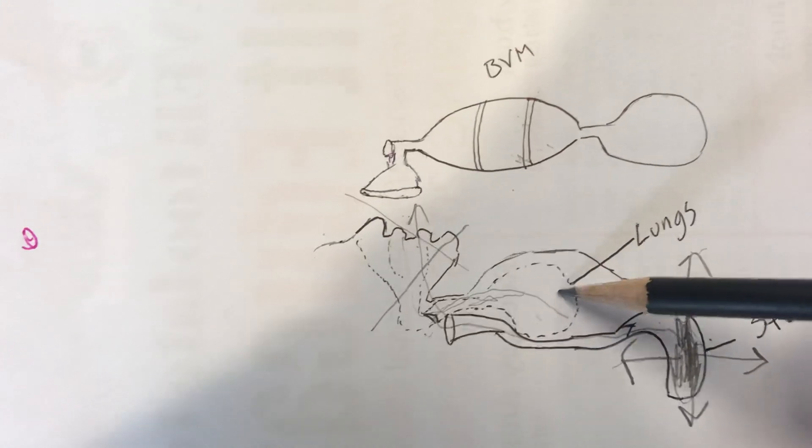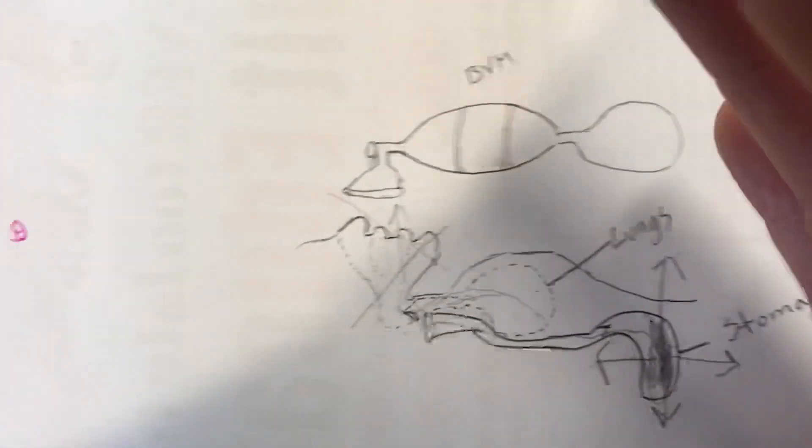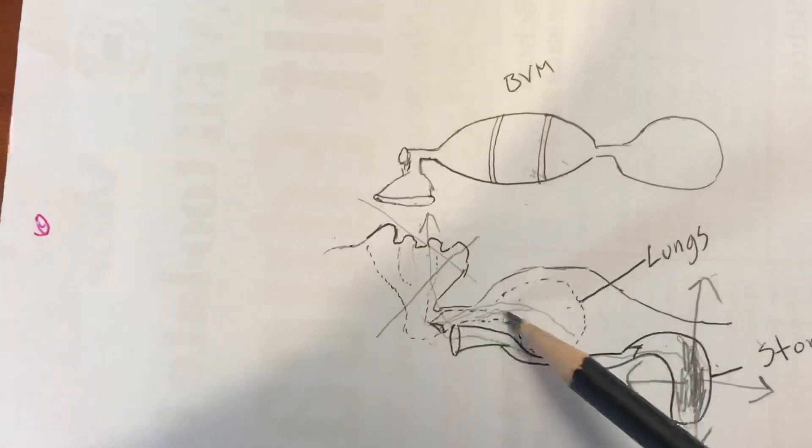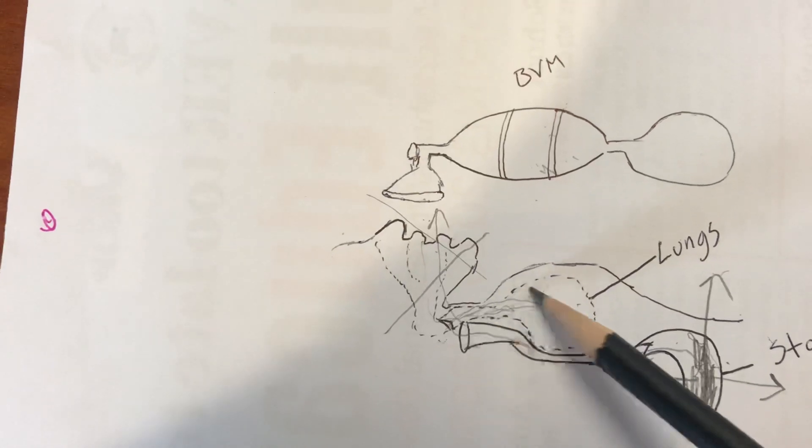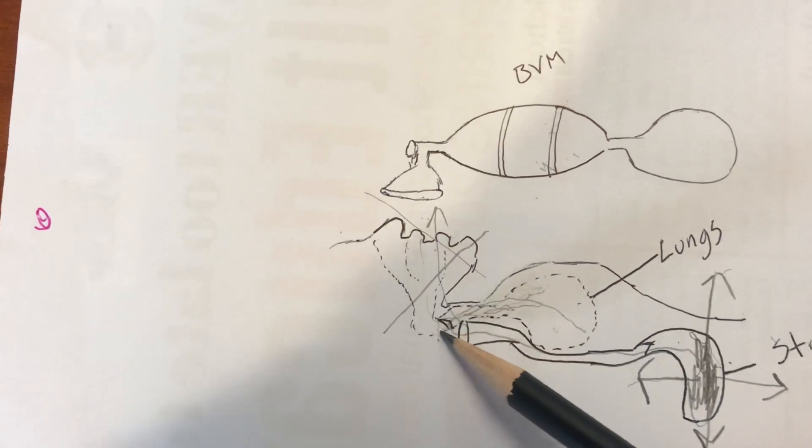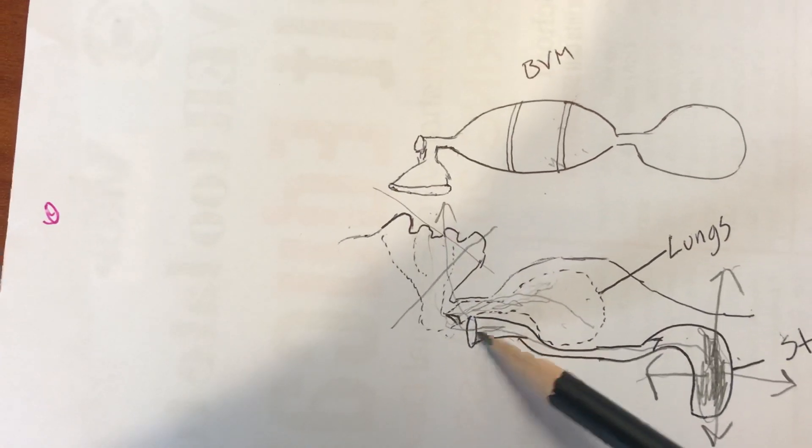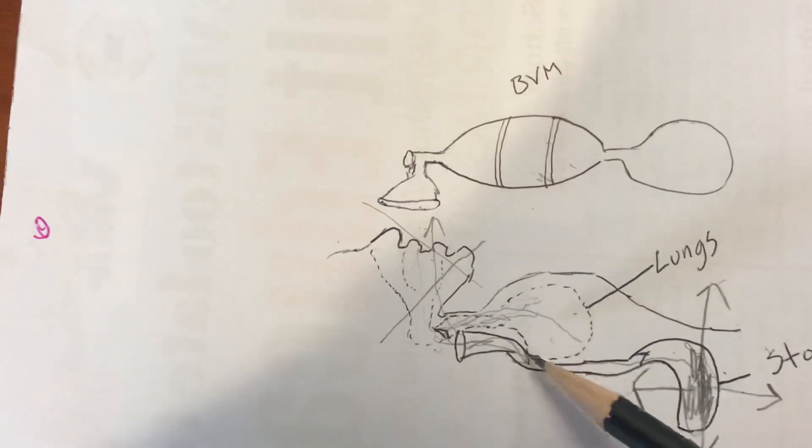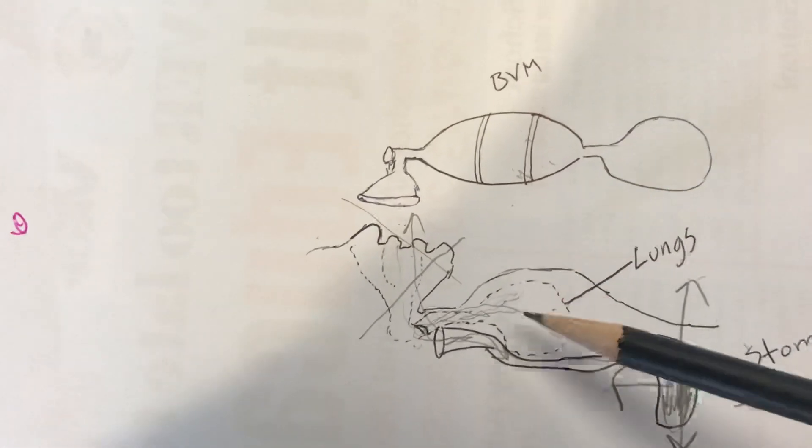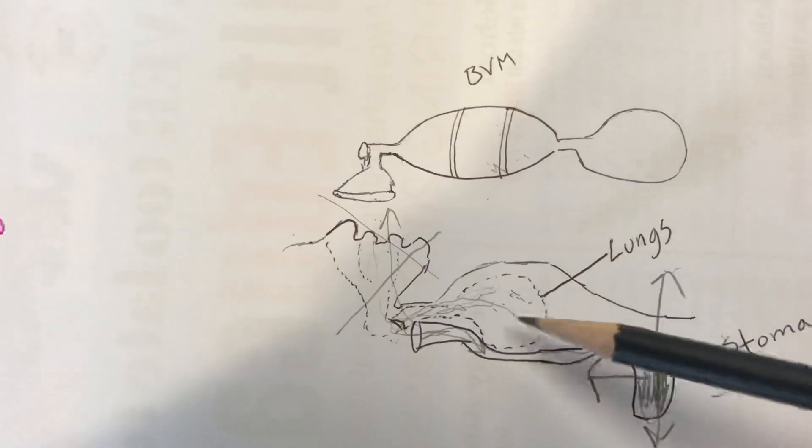Because of that, you have resistance, and a lot of that resistance is going to cause that air to go into the GI tract. So that's one reason why gastric distension occurs - because you don't have compliance with the lungs. The lungs aren't going to help you out.